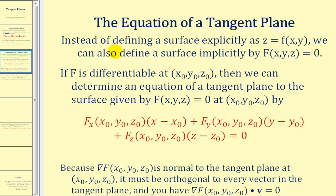Instead of defining a surface explicitly as z equals f of xy, we can also define a surface implicitly by F(x,y,z) equal to zero. We're going to have to do this to determine the equation of the tangent plane.